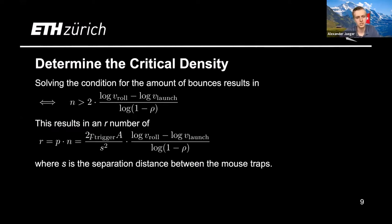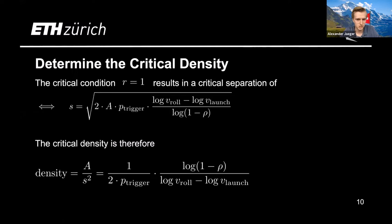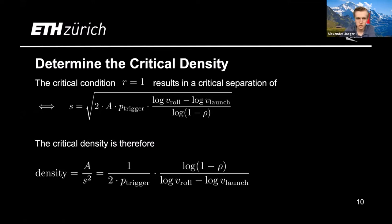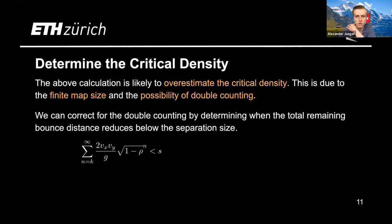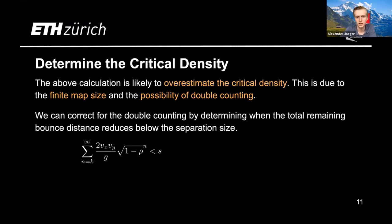Substituting N into the R number expression, we get an expression for R, written in terms of S — the separation distance rather than area. We can also write this as a density by dividing the area of the mousetrap by the area of the separation distance to get the critical density expression. This is likely to overestimate the critical density, because our model has a finite map size and the possibility of double counting. We can correct for this by determining the remaining bounce distance and terminating when it reduces below the separation size, yielding a corrected critical density.